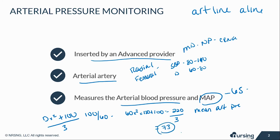A MAP of 73 is good. If a patient had a MAP of 50, it means their organs are not perfusing and that number needs to get higher. If they're on pressors, you need to get the MAP up to at least 65 so you know you're perfusing vital organs.